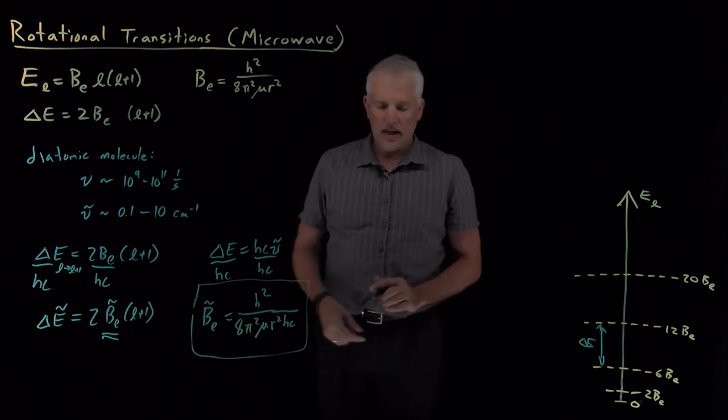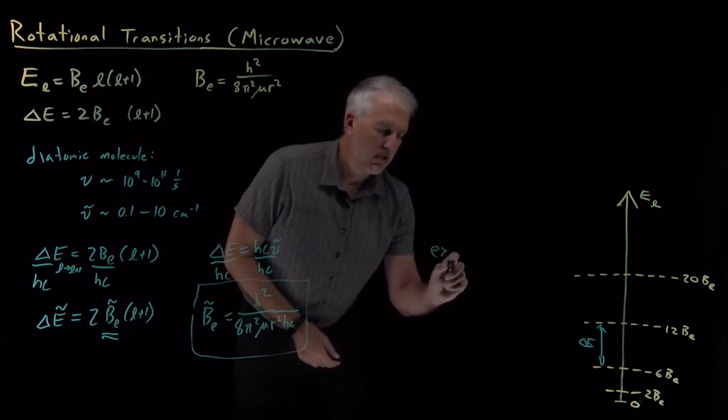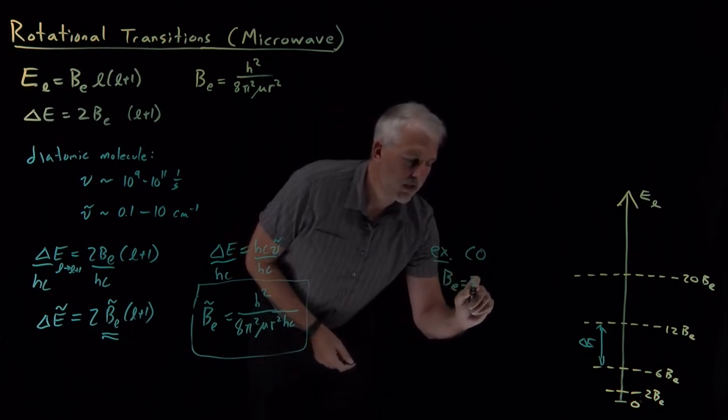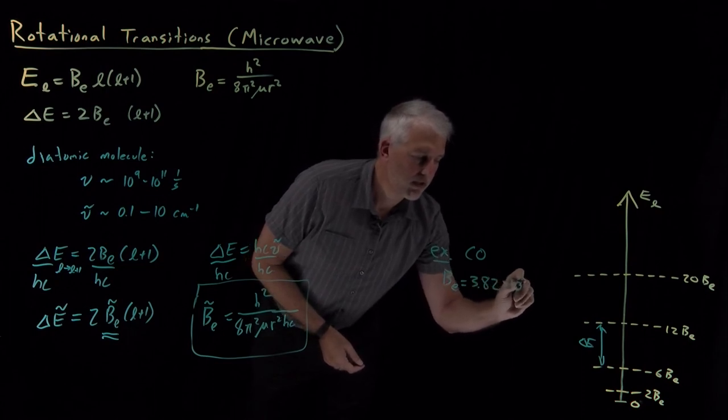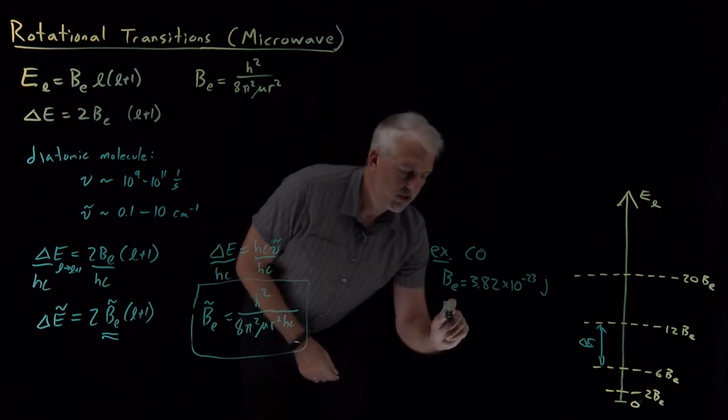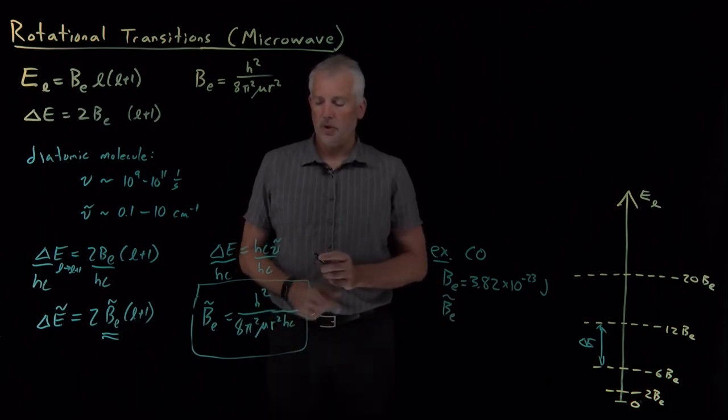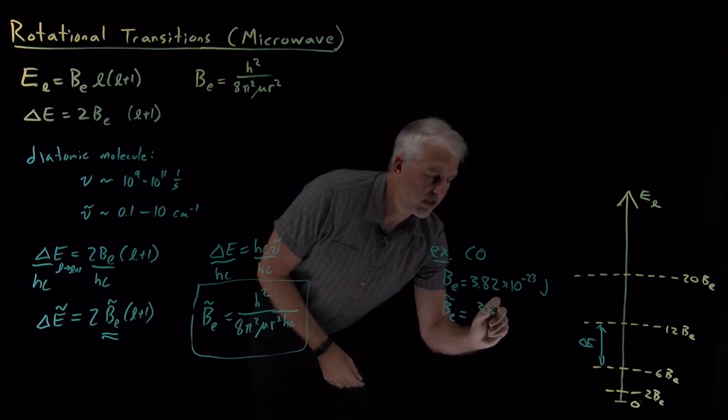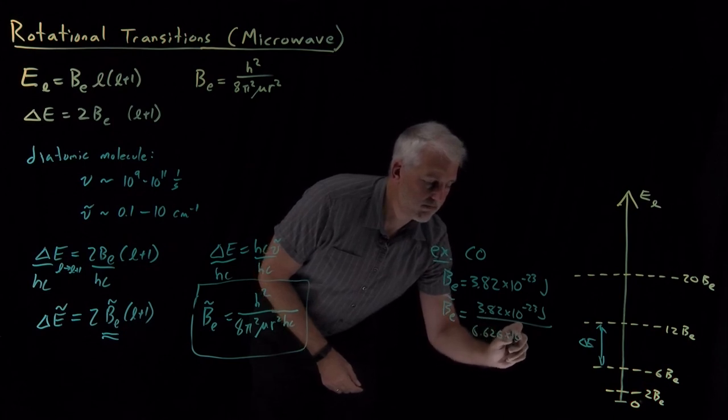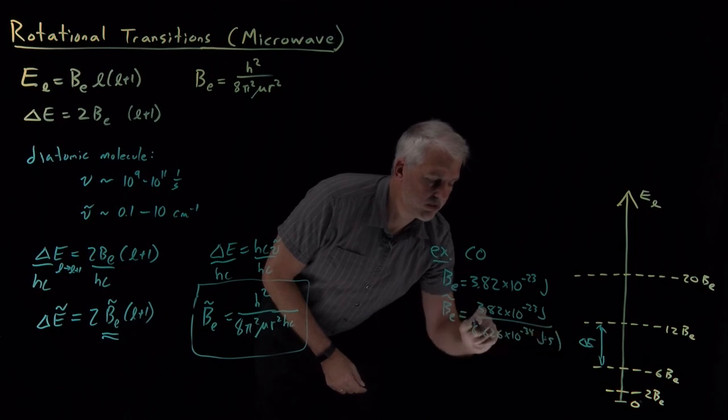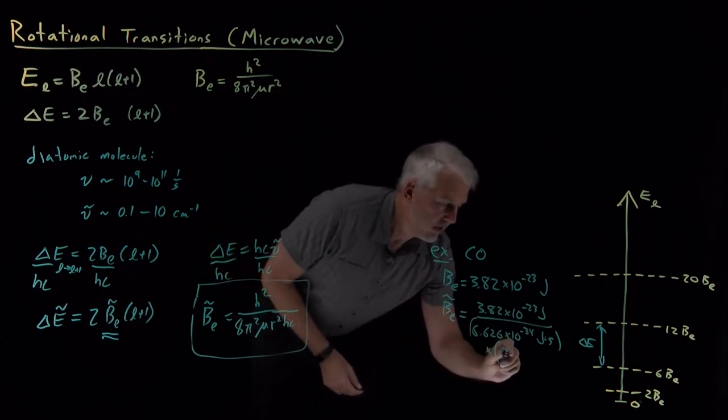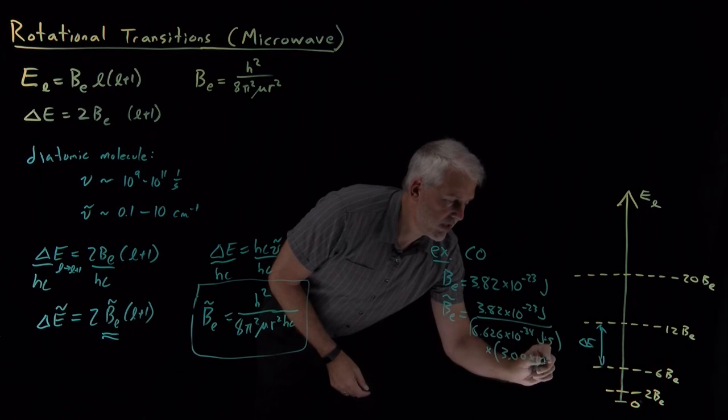Let's work one quick example to see how that works. If we take the carbon monoxide molecule, for which I'll tell you we already know the rotational constant is in units of energy, 3.82 times 10 to the minus 23rd joules, I'd like to know what is the rotational constant in units of wave numbers. So just divide the rotational constant by Planck's constant, joule seconds. Also in the denominator, divide by the speed of light, 3 times 10 to the eighth meters per second.